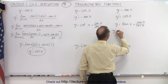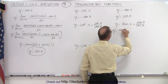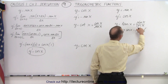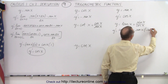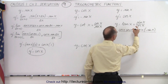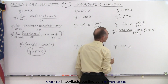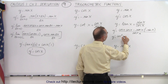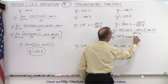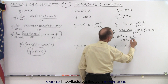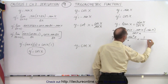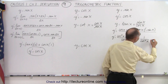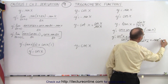For tangent of x, y-prime equals the denominator — cosine of x — times the derivative of the numerator, which is also cosine of x, minus the numerator — sine of x — times the derivative of cosine of x, which is negative sine of x. Be careful about the signs here, all divided by the denominator squared, cosine squared of x. This gives cosine squared of x plus sine squared of x divided by cosine squared of x. The numerator becomes one, so we get one over cosine squared of x, which is secant squared of x.